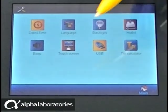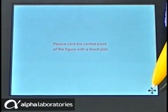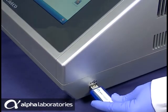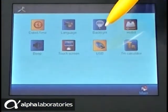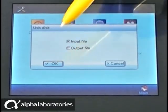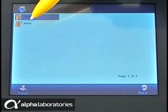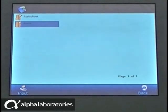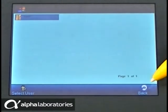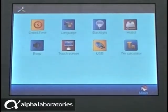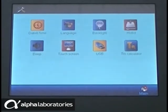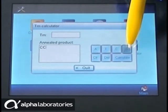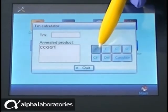This function tests touch screen responsiveness. The USB function enables pre-programmed protocols to be imported from a USB flash drive. Lastly, the melting temperature calculator helps you identify the best annealing temperature to target when optimizing for a new sequence. Just enter the code of your target DNA and touch Calculate.